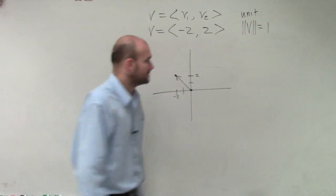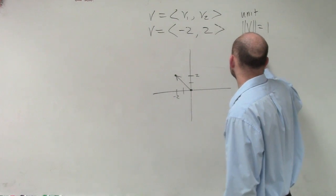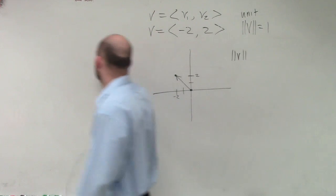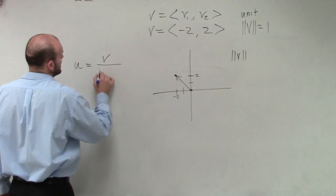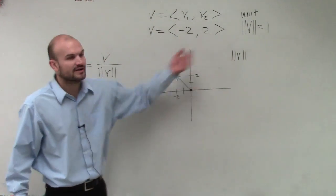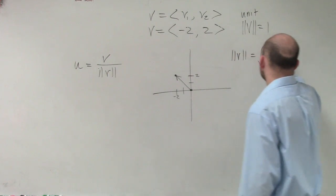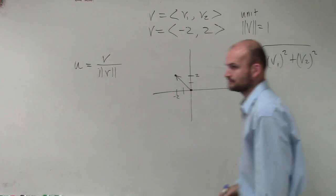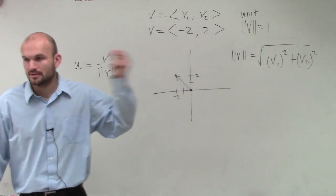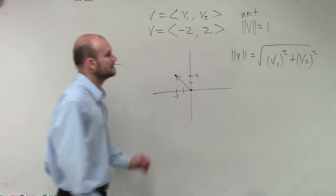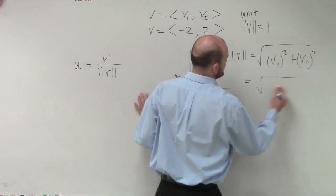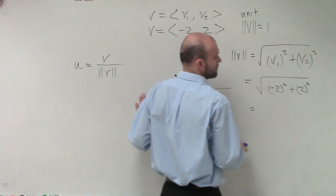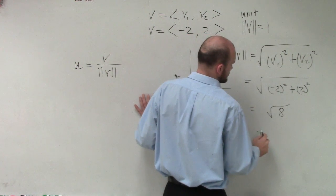So what I'm going to do is let's first figure out what the magnitude of v is. Because we said we have to define the unit vector. The unit vector u equals v divided by the magnitude of v. By going back to our formulas, we know that ||v|| is the square root of v1 squared plus v2 squared. Therefore, that's going to equal negative 2 squared plus 2 squared, which equals 4 plus 4, which is 8, which equals 2 radical 2.